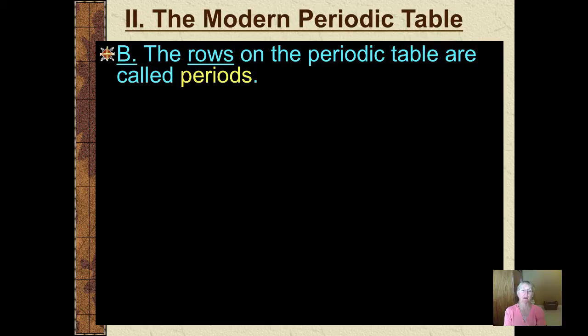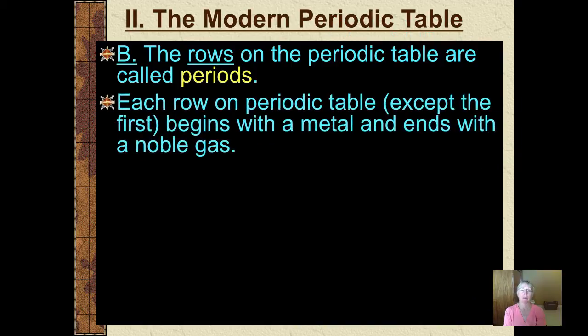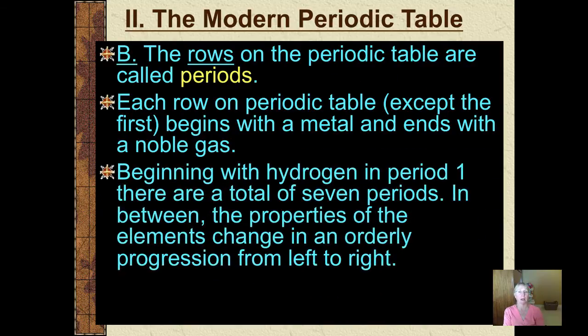Now the rows that go across are called periods. Remember we talked about the periodic table having periodicity, regularly repeating patterns in the chemical and physical properties of the elements. Each row in the periodic table starts on the far left with a metal and ends on the far right with a noble gas. There are seven periods.